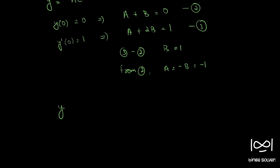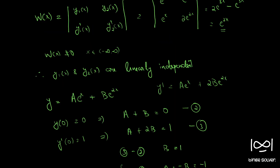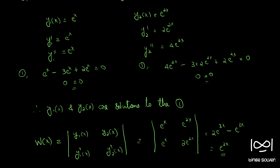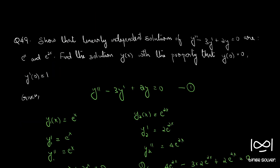We have a = -1 and b = 1, so y = -e^x + e^(2x), which we can write as y = e^(2x) - e^x. This is the required solution to question number 49.